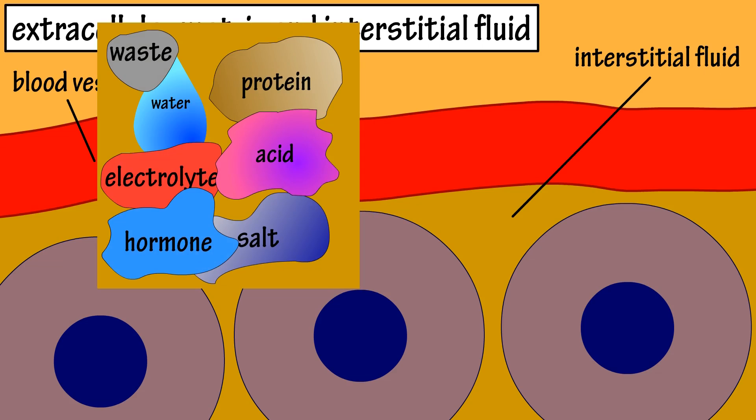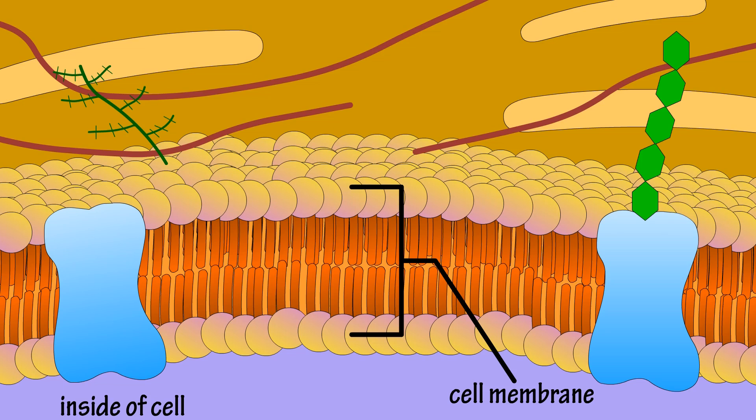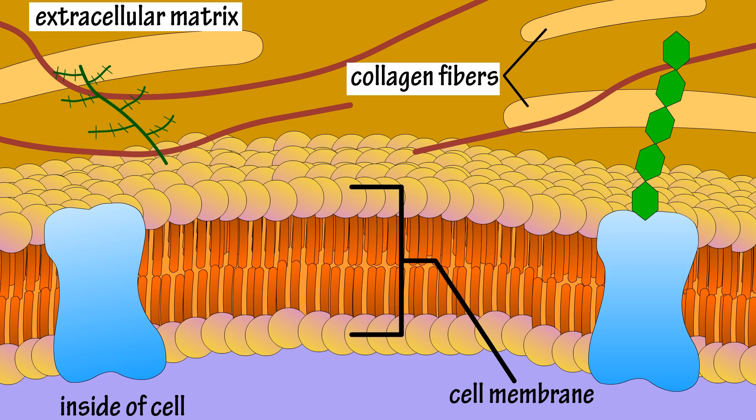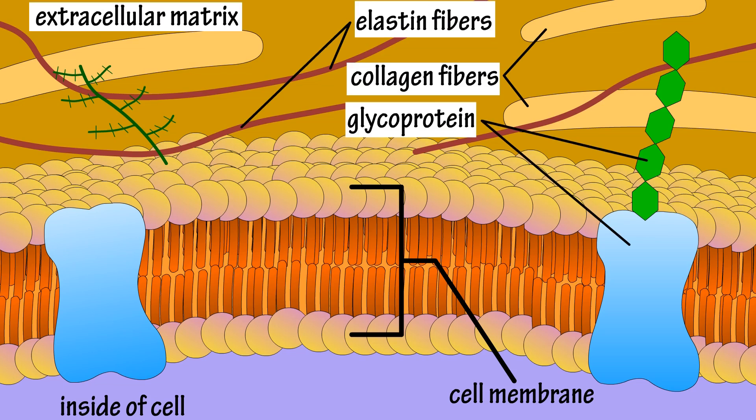There are also other components in this extracellular space, which together are called the extracellular matrix. The extracellular matrix often contains collagen fibers, elastin fibers, glycoproteins, which are proteins with carbohydrate subunits attached, and proteoglycans, which are made up of complex carbohydrates, proteins, and smaller carbohydrates.